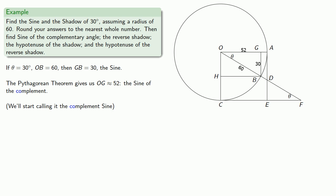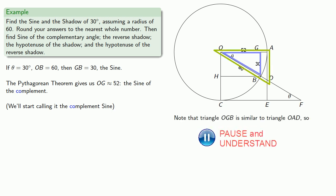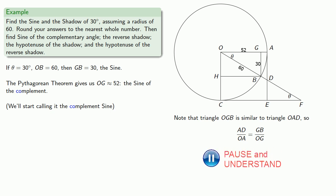What's useful to notice here is that triangle OGB is similar to triangle OAD. So we can use similar triangles: AD to OA equals GB to OG. We know that OA is the radius, so it's equal to 60. We found GB and OG, so we solve for the SHADOW.